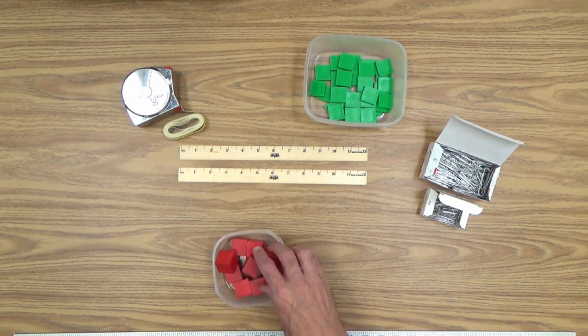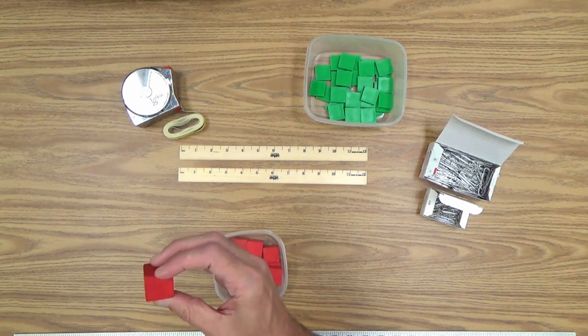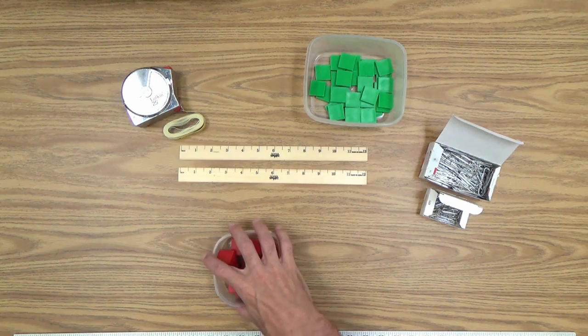Twelve or so of these one-inch color blocks, and they're actually cubes. And we'll use these to measure the height of an object.